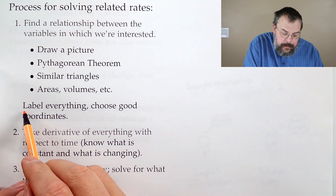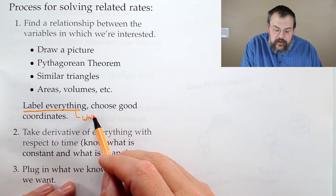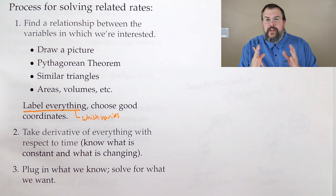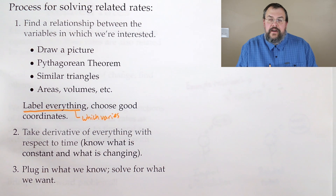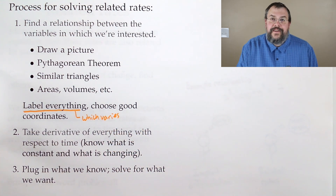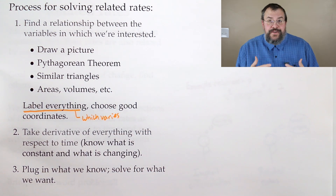When you draw a picture, label everything. In particular, what you want to do when we say label everything, you should label everything which varies. Figure out what things are changing — anything which can change, anything that's moving with time, that's a variable. Anything which can vary is a variable, so it needs to be assigned a label. Anything which doesn't vary is a constant, and we just assign whatever value it is. When you work with prompts, you also sometimes throw in coordinate systems. Choose good coordinates — this will come into play more and more, especially as we get into topics like Calculus 3. Put your zero in a convenient spot, and don't just put it arbitrarily.